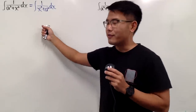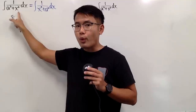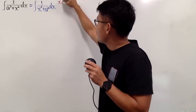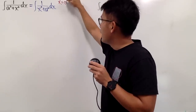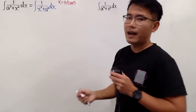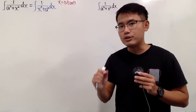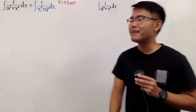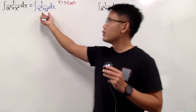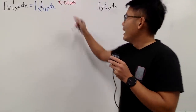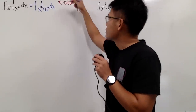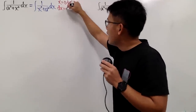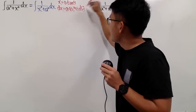Let me begin with the trig sub first. Notice we have the sum of two squares, therefore I will use the tangent situation. So I'll say x equals a times tangent theta. The reason I choose tangent is because tangent squared theta plus 1 gives secant squared theta, and that's how we can reduce two terms to just one. From here we do the usual business — differentiate both sides. So we get dx, which is going to be a times secant squared theta, d theta.